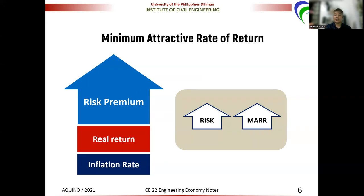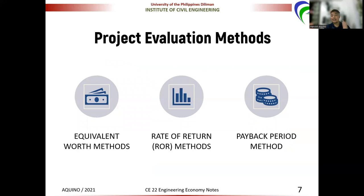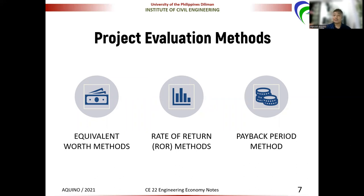Now, how do we evaluate projects? There are three types of project evaluation methods. The first is using equivalent worth methods. The second is rate of return, or ROR, methods. These two will be tackled in subsequent videos and pertain to evaluating the profitability of a project. The third one is the payback period method, which is used to evaluate the liquidity of a project — it answers how soon we are able to get the returns or recover our investment.